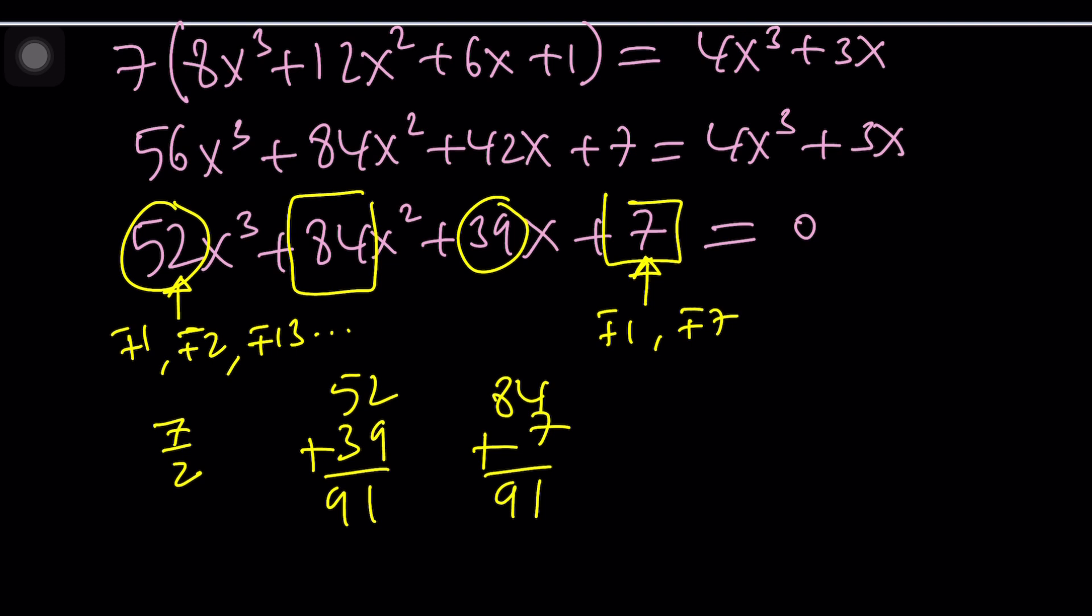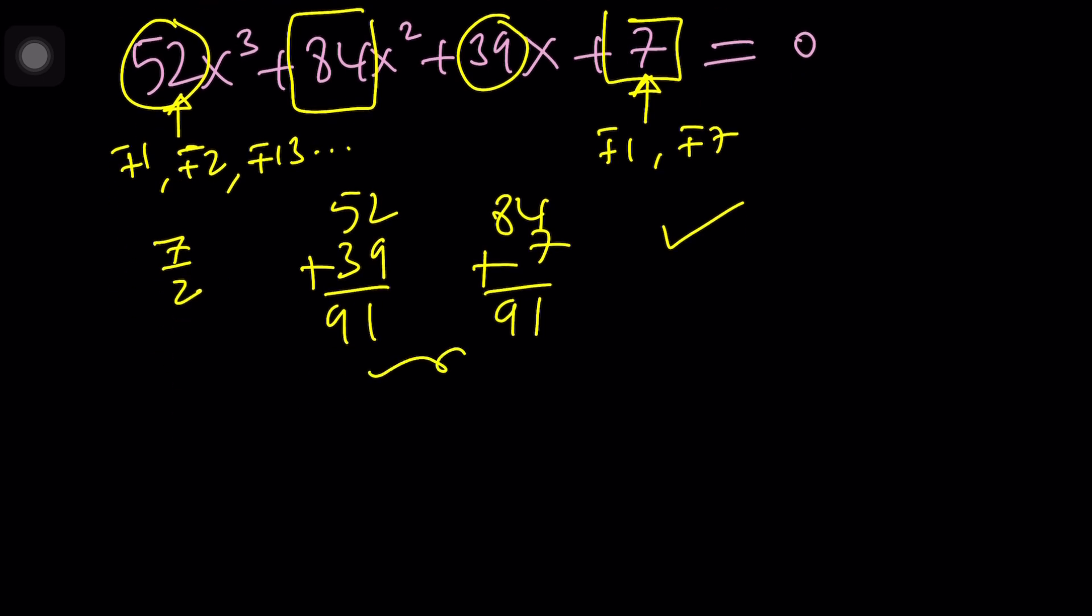If I do those sums, 52 plus 39 is 91, and 84 plus 7 is 91. So the circles equal the squares. What does that mean? It means x equals negative 1 is a solution because x plus 1 is a factor. Or x plus 1 is a factor because x equals negative 1 is a solution. Make sense? Vice versa.